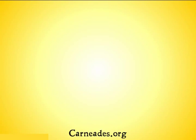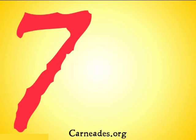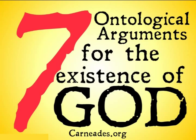Welcome back to the final part of our series on seven ontological arguments for the existence of God. In this video, we're going to be offering some final thoughts on the ontological argument. I'm going to be going through a generic version of the ontological argument and some general problems, in case you encounter a new ontological argument that doesn't quite fit into one of these categories. It'll give you a sense of some ways that you might object to it, be skeptical about it, or raise some doubts.